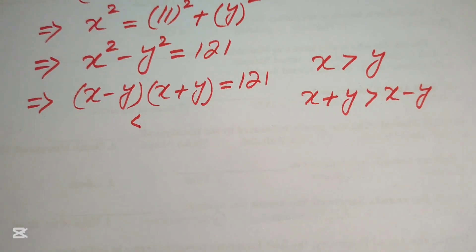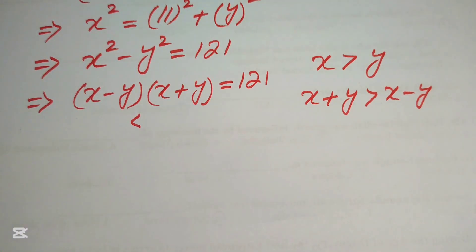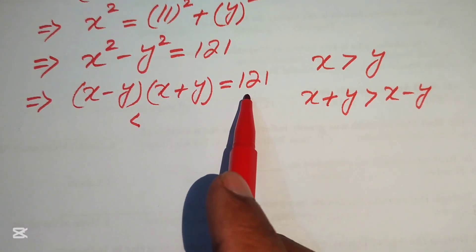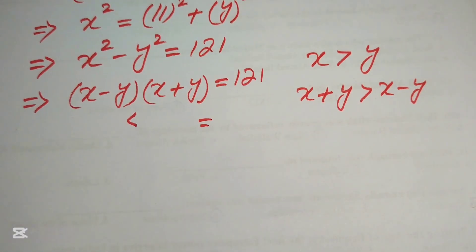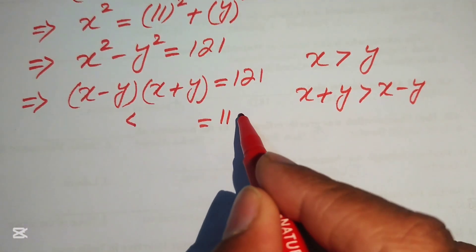On the left-hand side we have two factors multiplied together, and on the right-hand side we have 121. We need to express 121 as a product of two numbers. The two possibilities with positive integers are: 121 equals 11 times 11, or 121 equals 121 times 1.